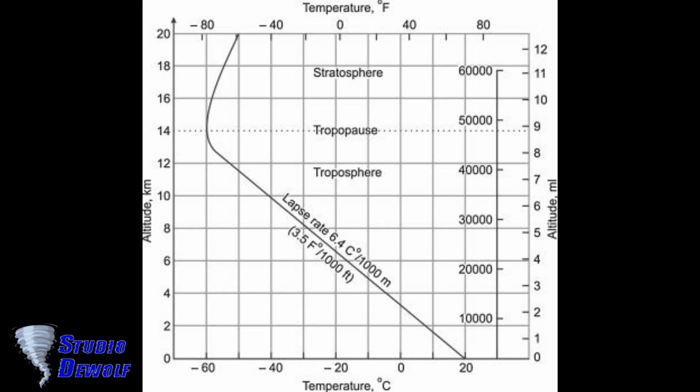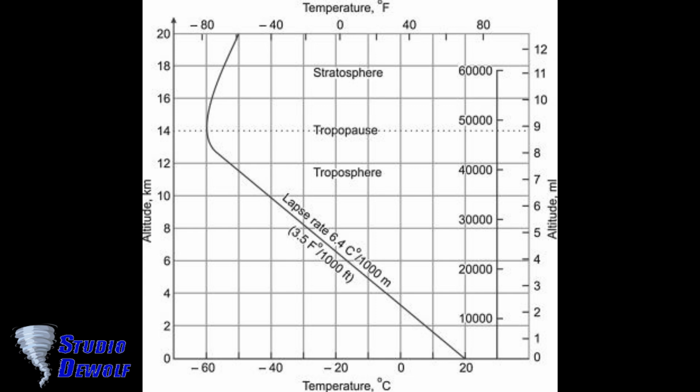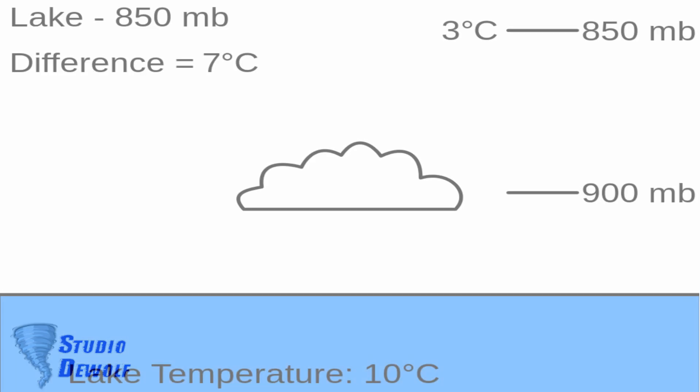The lapse rate is the rate at which an atmospheric variable, normally temperature in Earth's atmosphere, falls with altitude. In the first figure, you can see that the water temperature is more than 10 degrees Celsius and the air temperature is 3 degrees. The difference is therefore 7 degrees. It can form a cloud, but not big enough to produce snow. The minimum difference must be 13 degrees Celsius.